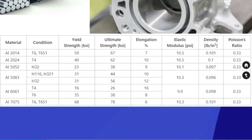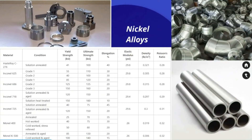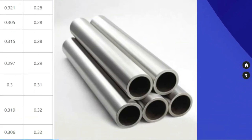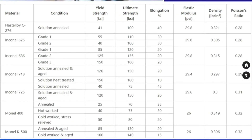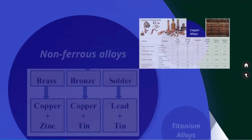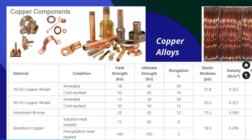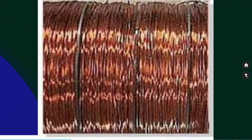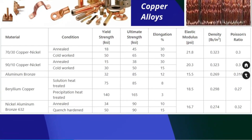Next, nickel alloys. Nickel alloys have high temperature and corrosion resistance. The table shows the mechanical properties of several common nickel alloys. Copper alloys are generally characterized as electrically conductive, with good corrosion resistance and relatively easy to form and cast. The table shows mechanical properties of several common copper alloys.